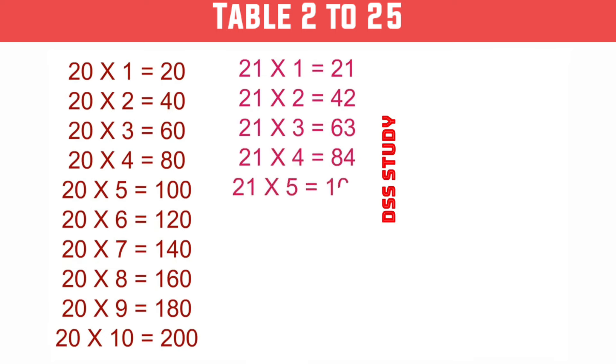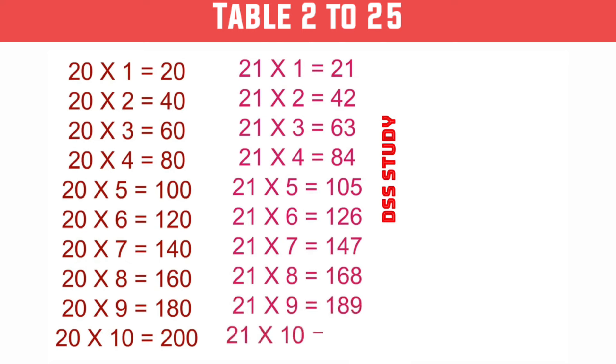21×5 is 105, 21×6 is 126, 21×7 is 147, 21×8 is 168, 21×9 is 189, 21×10 is 210.